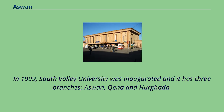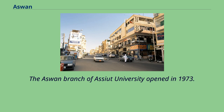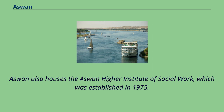In 1999, South Valley University was inaugurated with three branches: Aswan, Ghana, and Hurghada. The university grew steadily and is now firmly established as an institution of higher education in Upper Egypt. The Aswan branch of Assiut University opened in 1973. Aswan also houses the Aswan Higher Institute of Social Work, which was established in 1975.